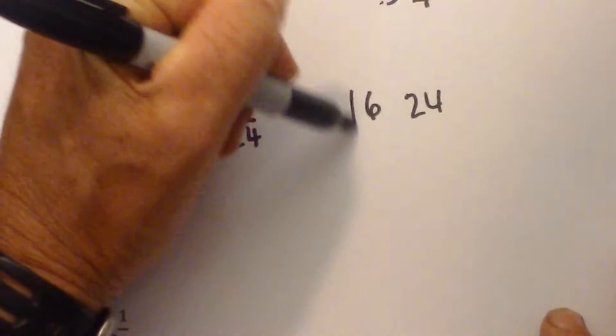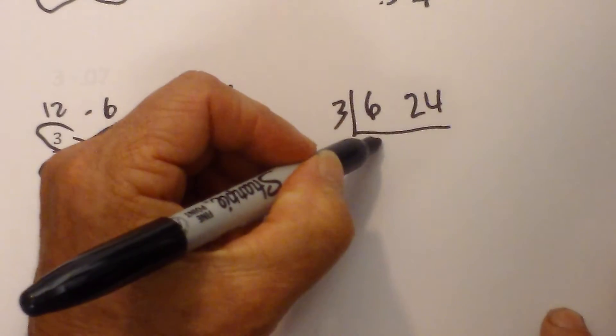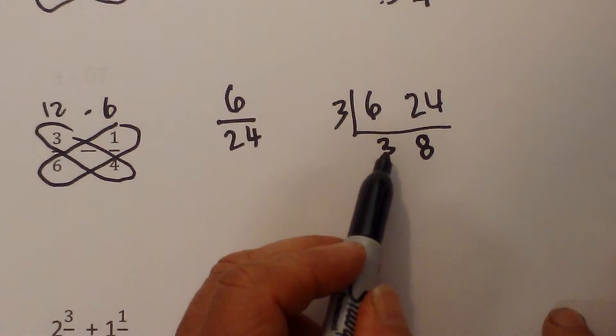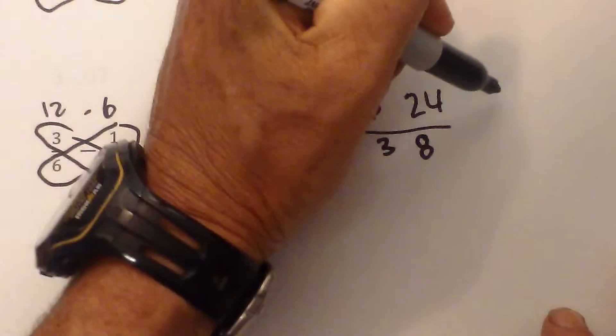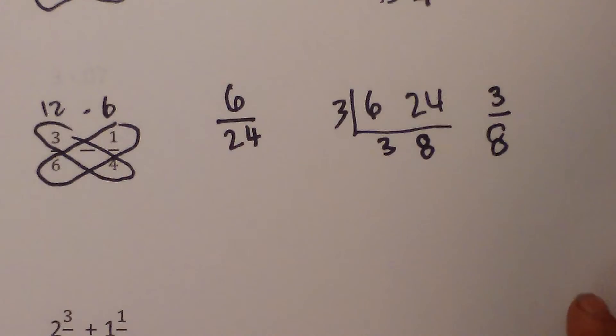And then I am going to simplify using the same method as before. I know that 3 goes into both of these. So that is 3 eighths. We have a prime number, we are down to prime. So the answer is 3 eighths. So that works with subtraction also.